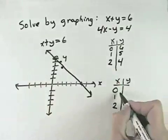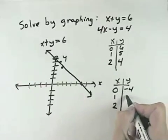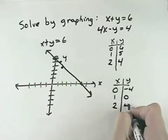Here, if x is 0, y will be negative 4. If x is 1, y is 0. And if x is 2, y is positive 4.